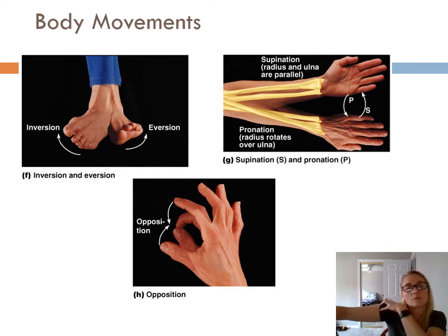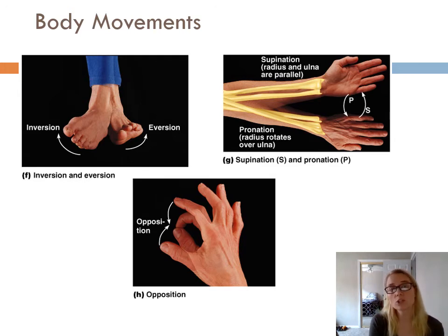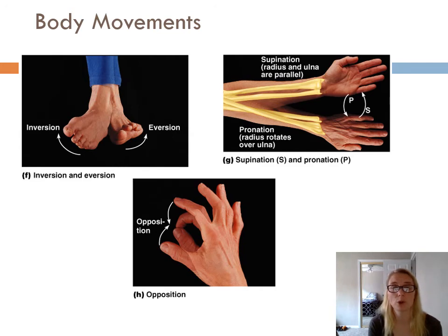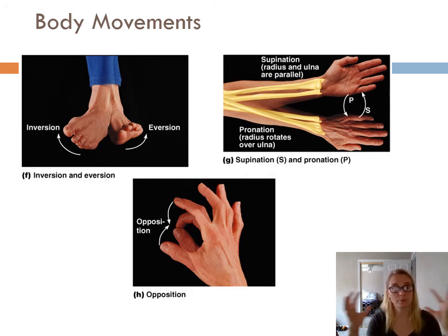Learning these words for body movements is basically helping you learn your muscle list. Use these terms interchangeably with what you're doing in lab to make things go a little bit easier. All the origins and insertions are things you'll pull back from your bone list that you worked on before — those tuberosities, tubercles, margins, and lines are the points of muscle attachment.